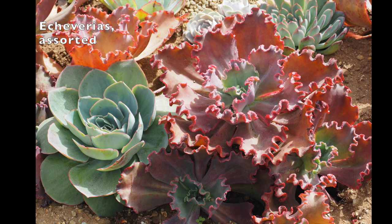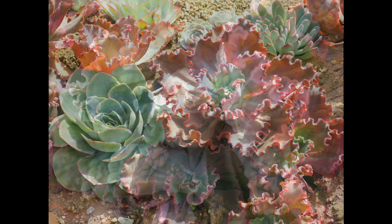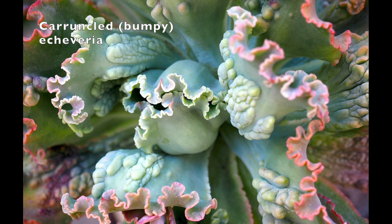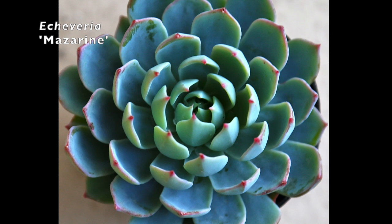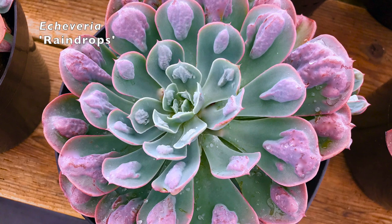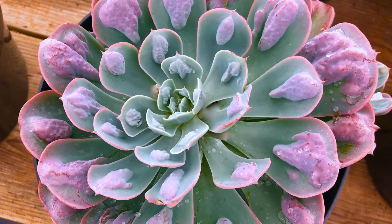Take Echeverias, for example. When I ask people if they like Echeverias with bumpy leaves, some do, some don't. I like the weirdness and irregular variations of the bumps, but I prefer Echeverias with tight, overlapping leaves, like this one. No wonder Echeveria Raindrops is so popular — it offers the best of both.